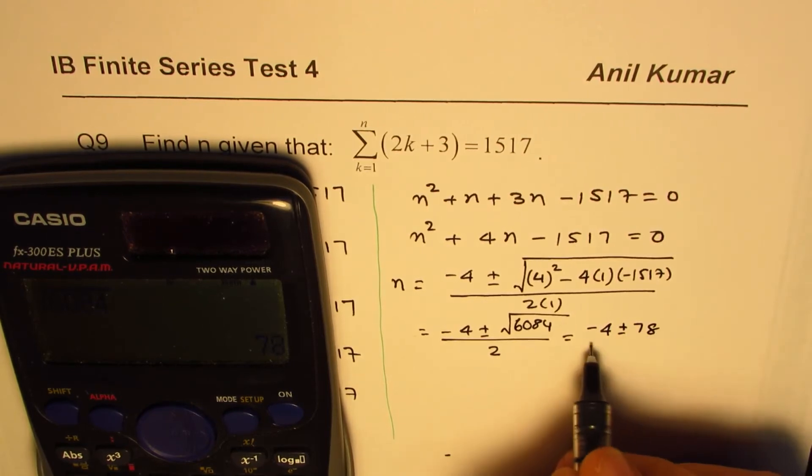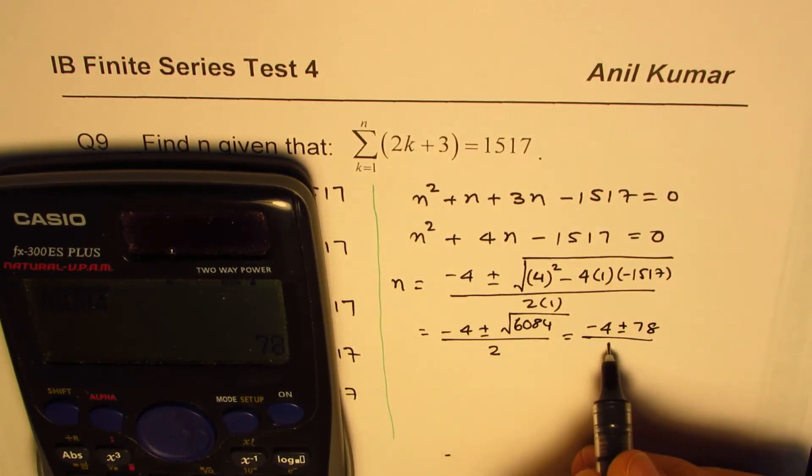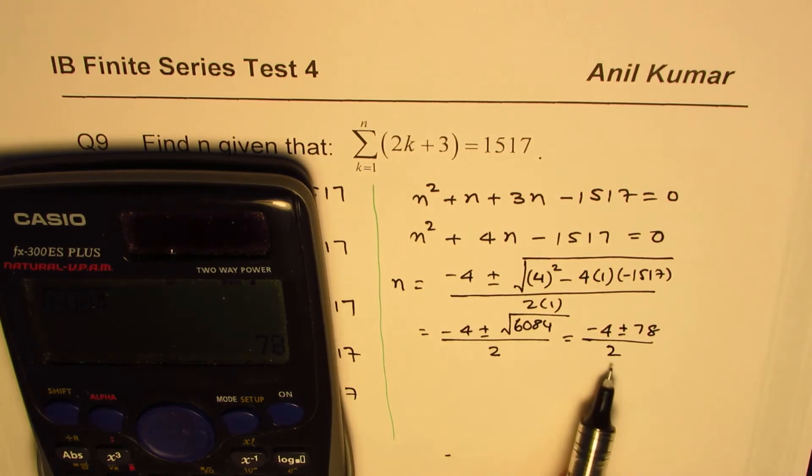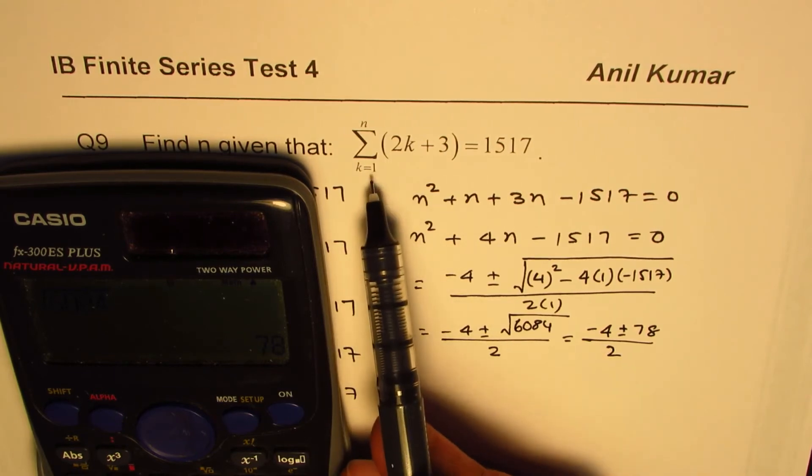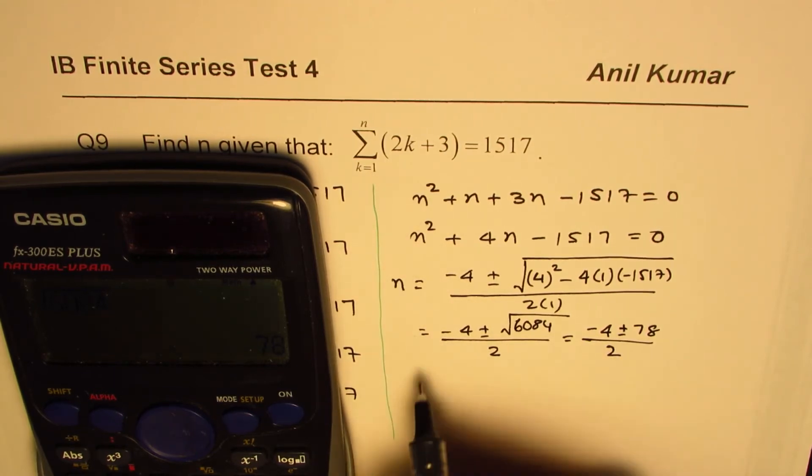You could use calculator to get both the answers, not an issue. Now, that is the value which you need to calculate. The negative signs should be ignored because n has to be greater than 1. So we'll use the positive signs.